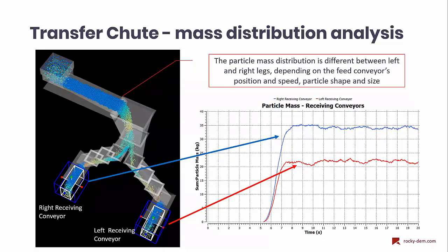Talking about the distribution of the material between legs, we can check the mass flow rate of particles leaving the chute on the receiving conveyors. In order to optimize this distribution, we can modify the position and speed of the feed conveyor.